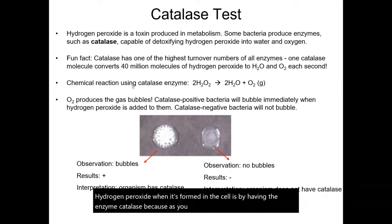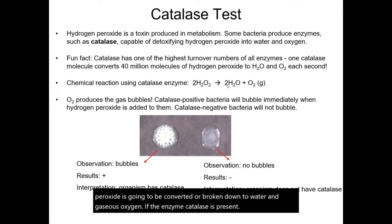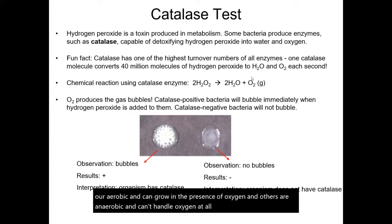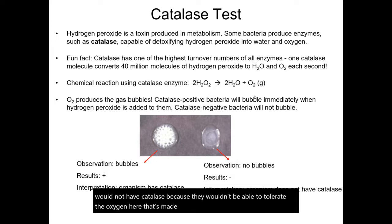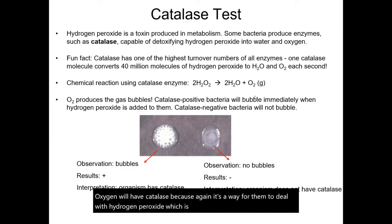Hydrogen peroxide is going to be converted or broken down to water and gaseous oxygen if the enzyme catalase is present. Water is something that bacteria can easily handle, as is oxygen. To clarify: aerobic organisms can grow in the presence of oxygen, while anaerobic organisms can't handle oxygen at all. So anaerobic organisms would not have catalase because they wouldn't be able to tolerate the oxygen produced. But many aerobic organisms will have catalase, because it's a way for them to deal with hydrogen peroxide, which is often made during metabolism.